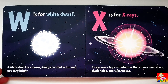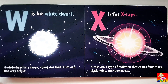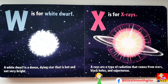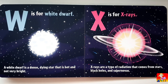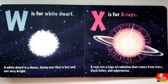W is for White Dwarf. A white dwarf is a dense dying star that is hot and not very bright. X is for X-rays. X-rays are a type of radiation that comes from stars, black holes and supernovas.